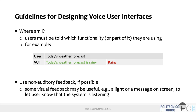Another practice is to use non-auditory feedback where possible — complement voice with visual feedback. Yesterday we saw that Alexa lights its ring when you say the wake word, signaling 'I'm ready to accept your question.' This is a simple but effective visual feedback; without it, you wouldn't know if the wake word was recognized or if something went wrong.